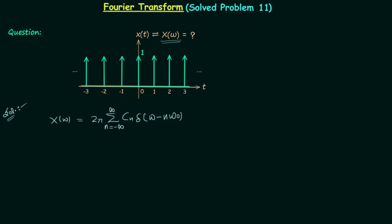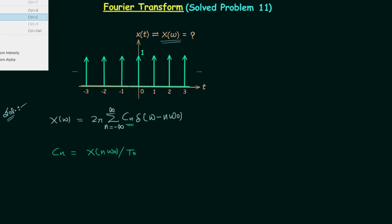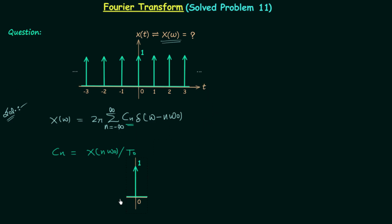The important thing is the calculation of Cn. We know Cn is equal to X(nω₀) divided by T₀. To calculate X(nω₀), we select the central impulse, and we have already calculated the Fourier transform of the impulse located at the origin. We know its Fourier transform is equal to 1, therefore Cn is equal to 1 over T₀.